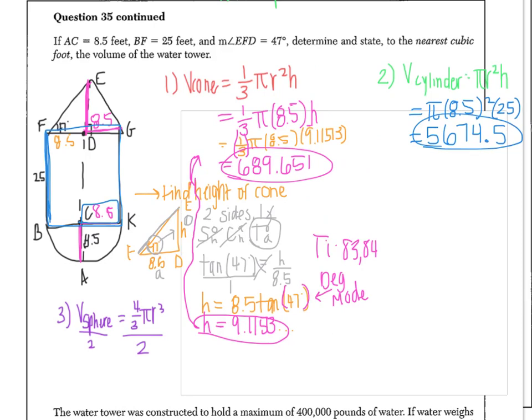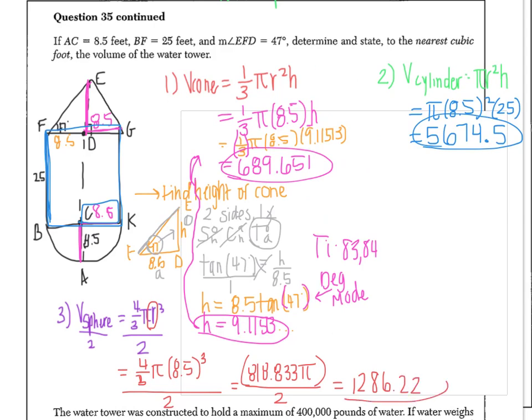And the last part of this problem that I need to calculate is the volume of my half sphere. So all I need to plug in here is a radius, 8.5. So I have 4 thirds pi times 8.5 raised to the power of 3, all divided by 2. I'm going to deal with this top part first, get a value, then divide by 2. Here I have 818.833 pi. I chose not to type in the pi right away because I just wanted to get rid of the fraction first. Making sure I type in the top part in parentheses, I end up with 1,286.22. Again, circling it because it's part of my final answer.